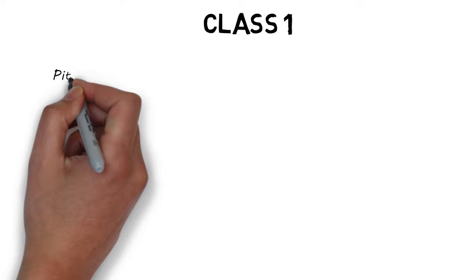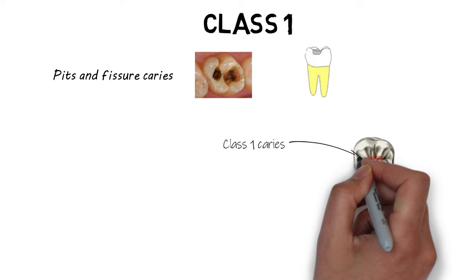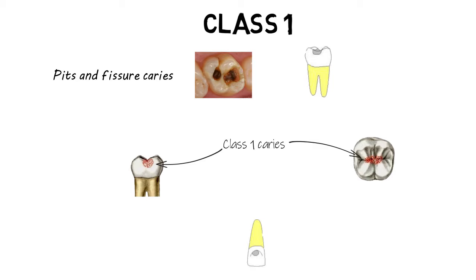Class 1 basically includes the caries that occur in the pits and fissures. These most often occur on the occlusal surface of the posterior teeth, but also include pits and fissures that extend down to the lingual or buccal surface of the posterior teeth. Also included are caries that less often occur on the pits of the lingual surface of the anterior teeth.